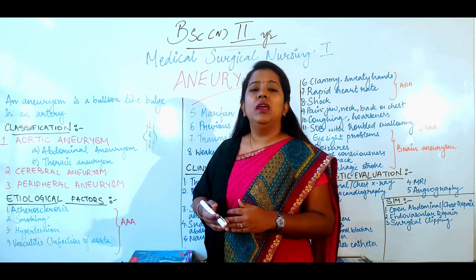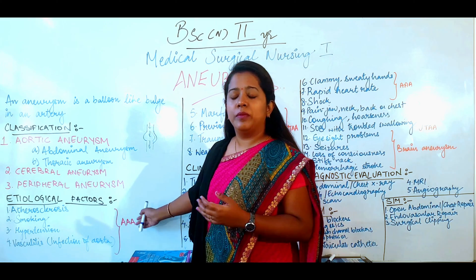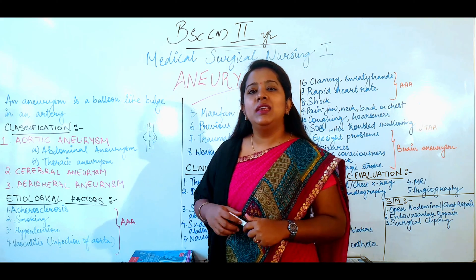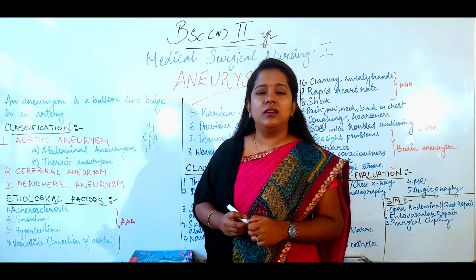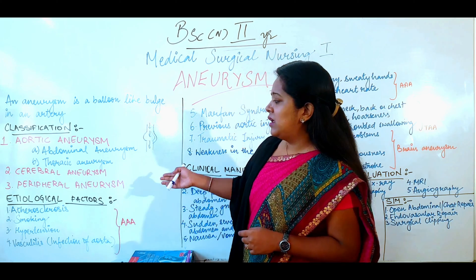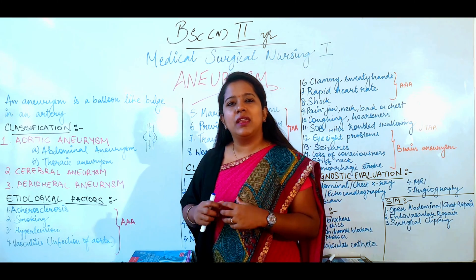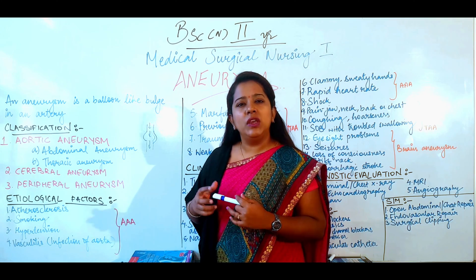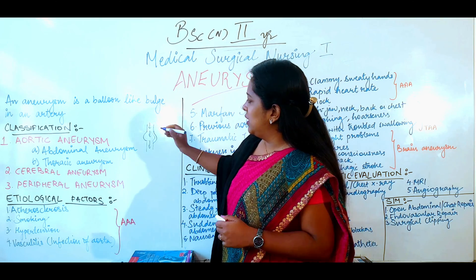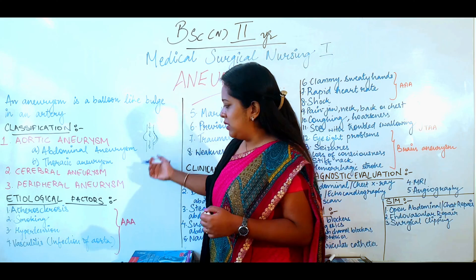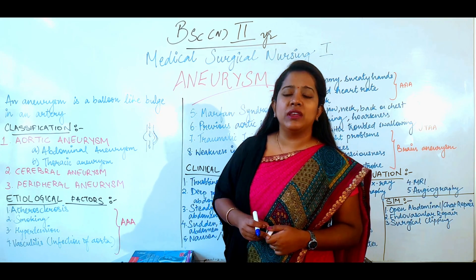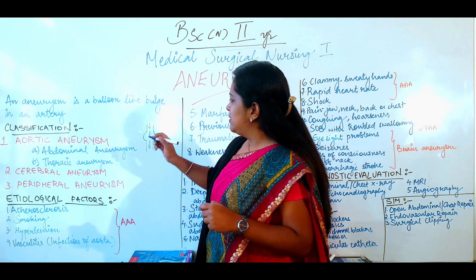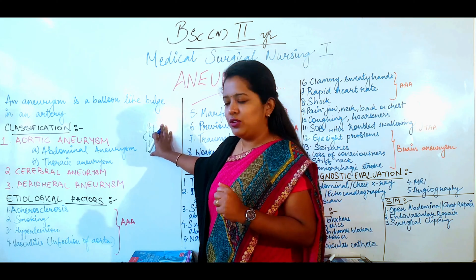Next we will talk about what causes aneurysm. For abdominal aortic aneurysm, the first cause is atherosclerosis — if any type of calcium or fat deposits develop as plaque in the artery or aorta, then that can cause the muscular structures to be damaged and bulging can occur. Smoking and alcoholism — these lifestyle issues — have harmful or toxic effects that can damage the muscular build-up of the artery wall.